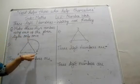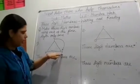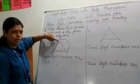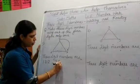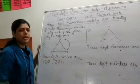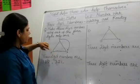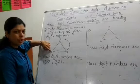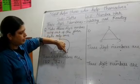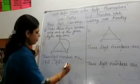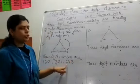Now starting from 3 — if we move clockwise, we get the number 3, 2, 1. So our second 3-digit number is 321. Now starting from 2, again move clockwise. So our number is 2, 1, 3. Our third number is 213.